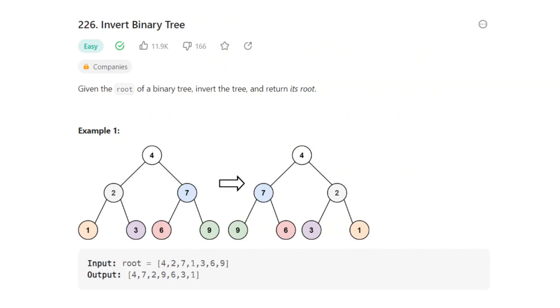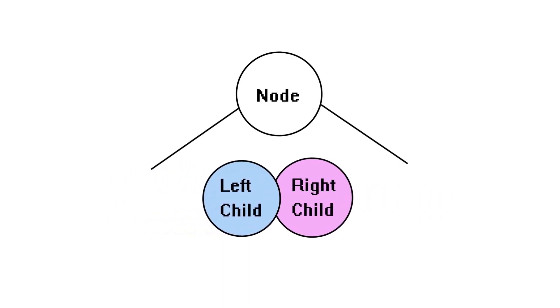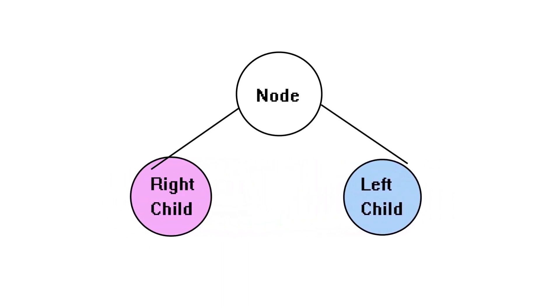The sixth question is invert binary tree. Given the root of a binary tree, invert a tree, and return its root. We know that a binary tree is a tree in which every node has at most two children. And to invert a binary tree is to swap the position of the left and right children of each node.